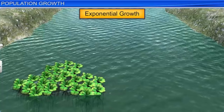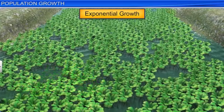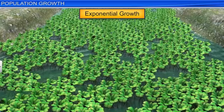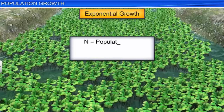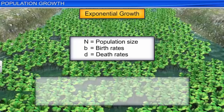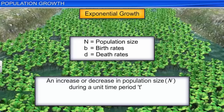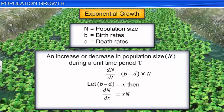Let's take the example of the Pistia plant. When it is introduced in a water body, due to unlimited food and space, these plants grow exponentially and cover the entire water body in a matter of a few days. Considering the population size as N, birth rates as B, and death rates as D, the increase or decrease in population size during a unit time period T is as shown. The difference between the birth and death rates provides the value of R, or the intrinsic rate of natural increase. This is a very important parameter for measuring the impact of biotic or abiotic factors on population growth. The intrinsic rate of natural increase is a measure of the inherent potential of a population to grow.